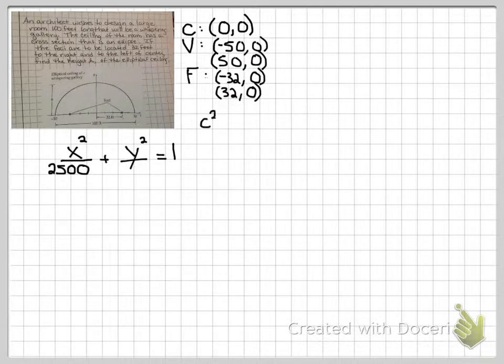So remember, c squared equals a squared minus b squared. I know a squared, it's the major axis, it's that 2500 value. I'm looking for b squared.